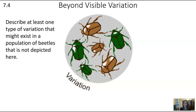Next up, let's talk about variation. It's really important to recognize that in all of these examples we talked about — the change of a gene pool — we were looking at beetles that were either green or brown. You might notice that these beetles in this model also vary in size. Almost all models in textbooks and videos show very clear variation that's easy to see visually, so often color-based. But to deeply understand evolution, it's important to know that most variation you can't see just by glancing at a population. Describe at least one type of variation that might exist in a population of beetles that's not depicted here.